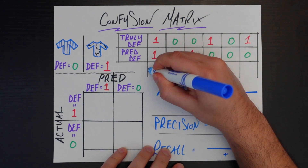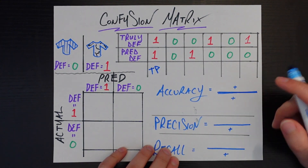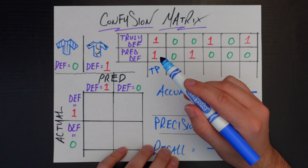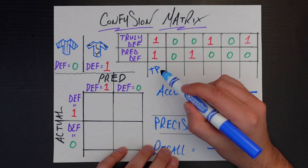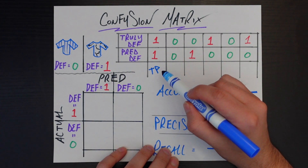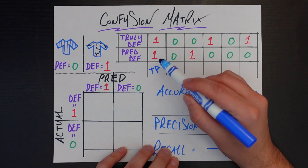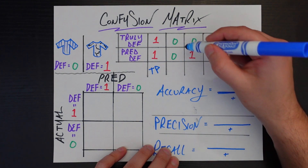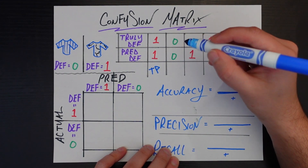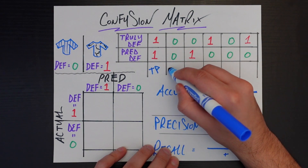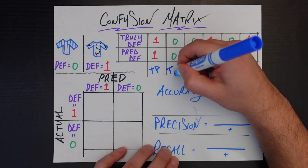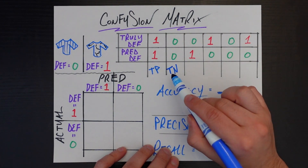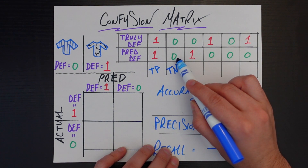So we'd write that as TP. That first letter, true, means that our model did a good job — it predicted this case correctly. And the second word positive tells us what our model predicted this case as. In this case, it was predicted in the positive class, which in the context of this problem means a defective product. Let's look at the second one. This also our model predicted correctly, so this is also a true case. It's just the opposite in the case that it's a true negative. The way to read this is basically we truly predicted this case was negative, so in the zero class.